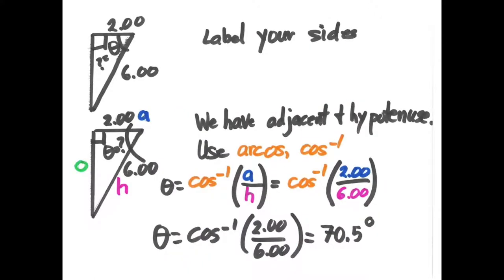Let's look at another triangle where it's a right triangle and the angle we want is in the upper right-hand corner. We label our sides: hypotenuse, adjacent, and opposite. In this case we only have the adjacent and hypotenuse, which means we're dealing with the arc cosine. To find angle theta, we take the arc cosine of the adjacent divided by the hypotenuse — arc cosine of two divided by six — which gives us an angle of 70.5 degrees.